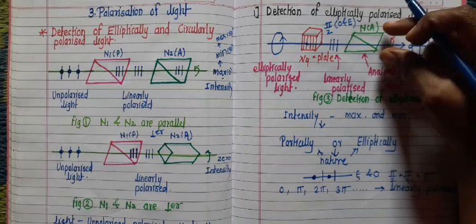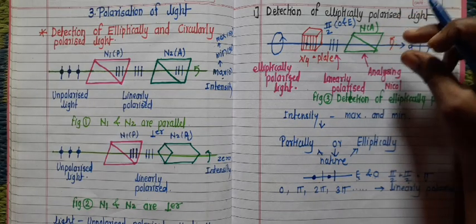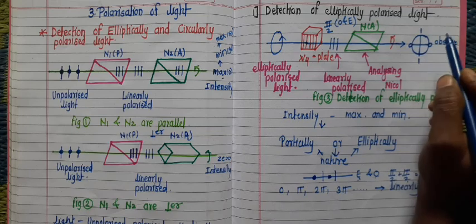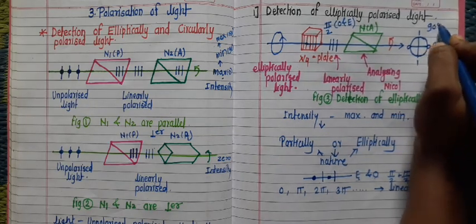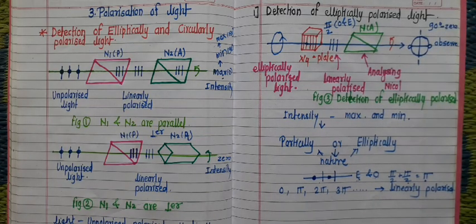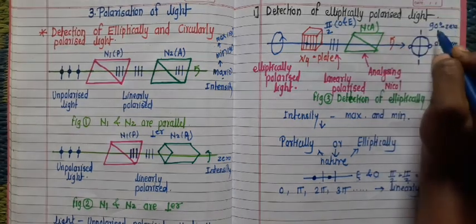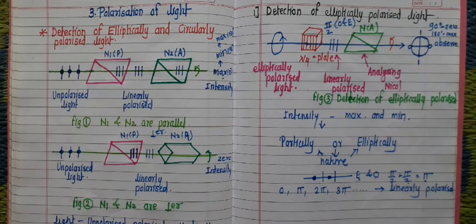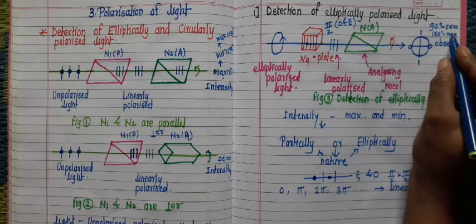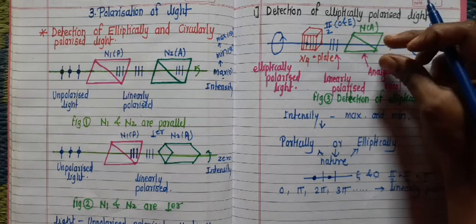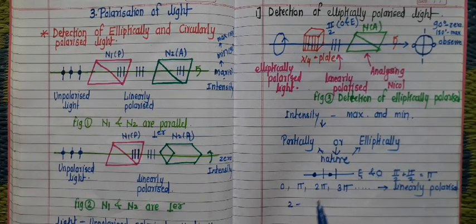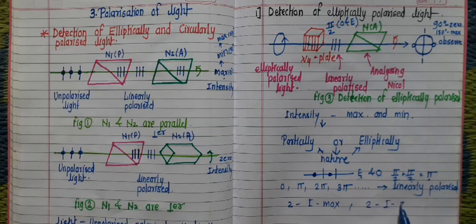After passing through the quarter wave plate, if we rotate our analyzer, we observe that initially the intensity of light is maximum. After that, at 90°, the intensity of light is zero — completely zero. Again, if we rotate our analyzer to 180°, we again observe maximum intensity. And again, at 270°, the intensity of light is zero. So during this complete rotation of the analyzer, at two points the intensity is maximum and at two points the intensity of light is zero.